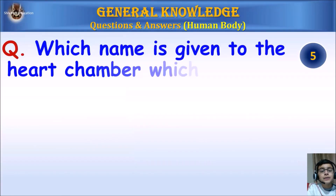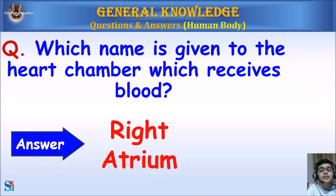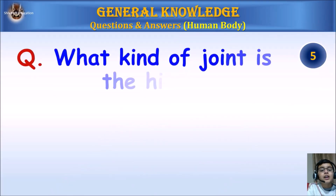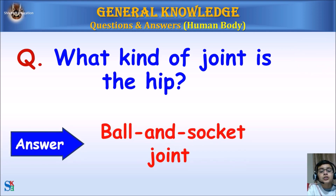Which name is given to the heart chamber which receives blood? Answer: Right atrium. What kind of joint is the hip? Answer: Ball and socket joint.